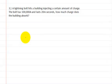So let's go to number 3. A lightning bolt hits a building, injecting a certain amount of charge. The bolt has 100,000 amps and lasts 20 milliseconds. How much charge does the building absorb? Again, this is exactly the same as the previous problem.